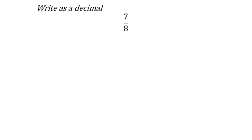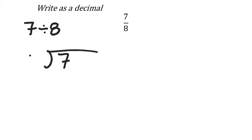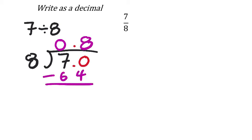Let's write 7/8 as a decimal using long division. 8 won't go into 7, so make it 7.0. Bring the decimal up. 8 goes into 70 eight times: 8 times 8 is 64, subtract to get 6. Add another 0 to make 60. Extend the line — 8 goes into 60 seven times: 7 times 8 is 56, subtract to get 4. Add another 0 to make 40. 8 goes into 40 exactly 5 times with nothing remaining. Result: 0.875.